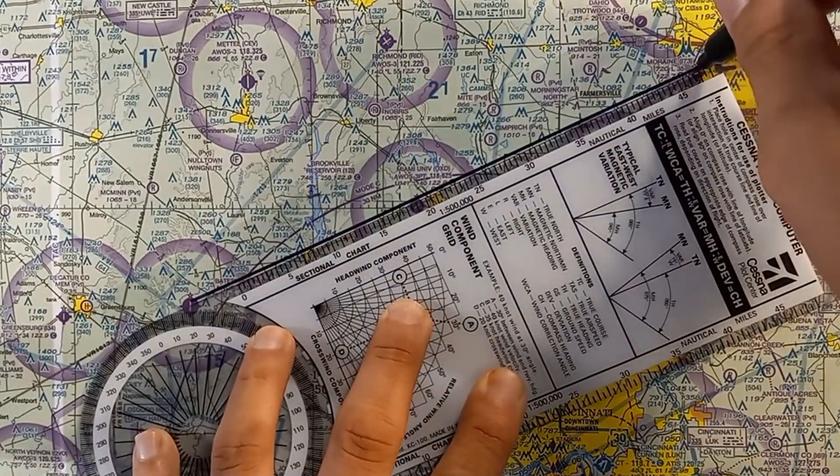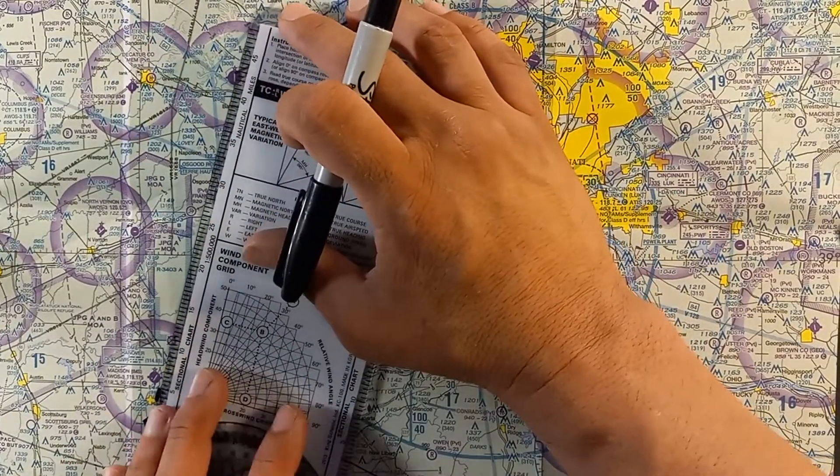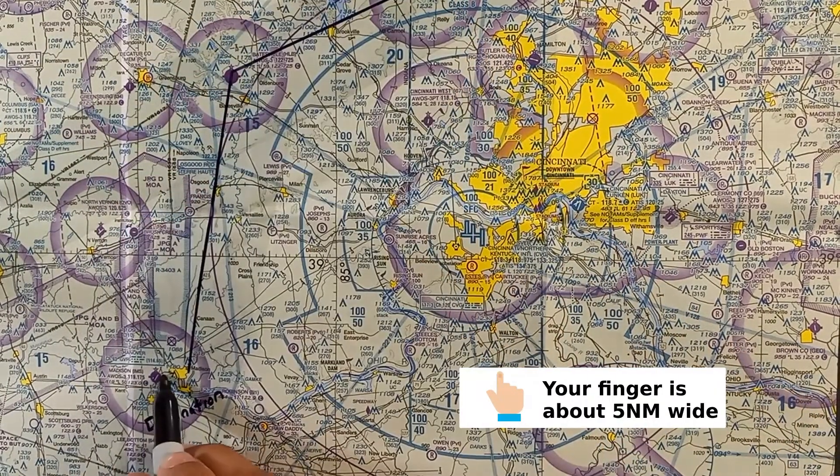Checkpoints should be spaced closely enough together so that each time you fly over one you can pick out the next one, but not so close that you can just fly right past one without even noticing. 10 to 15 miles is a good rule of thumb.